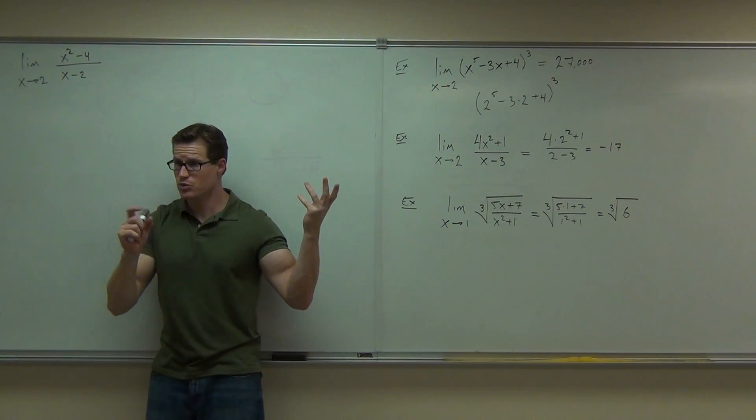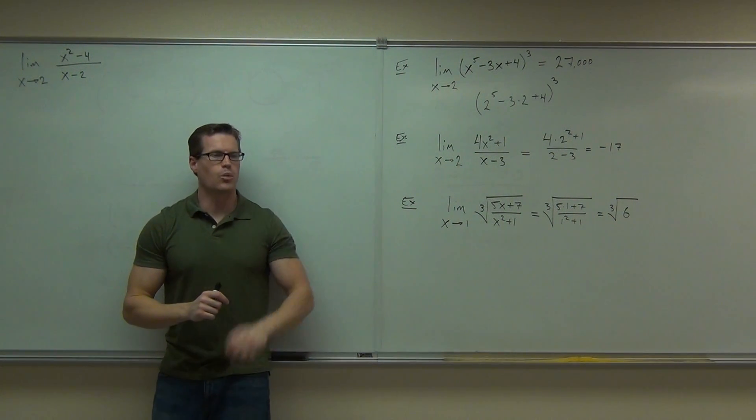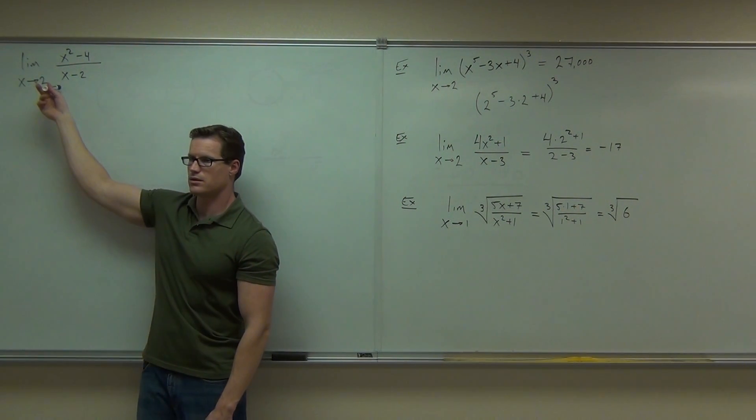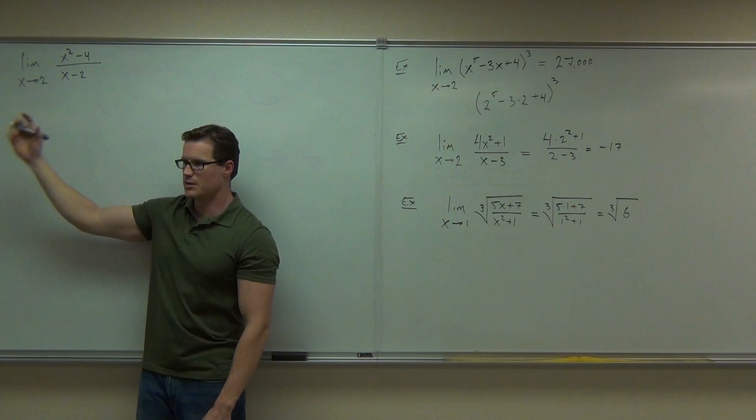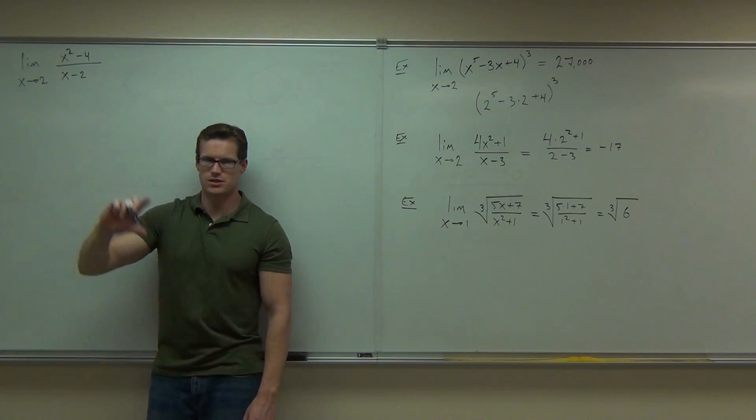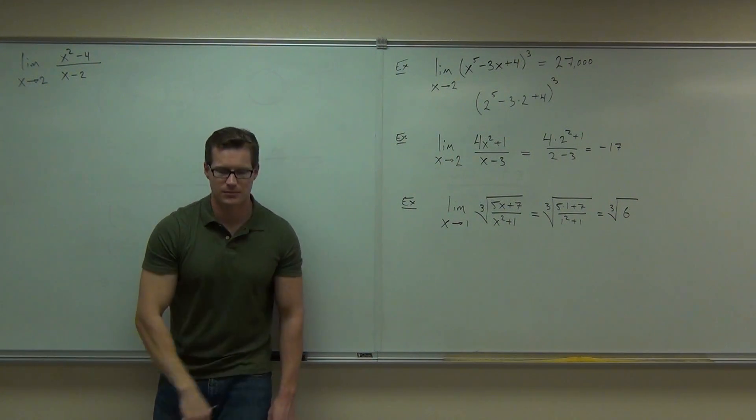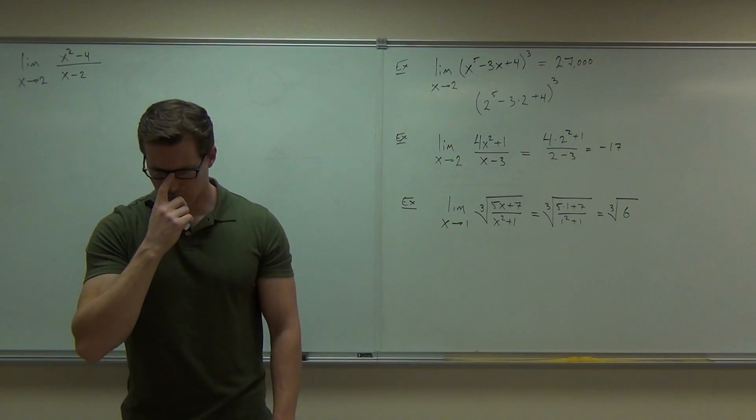You get 0. Is it okay to have 0 on a numerator? Sure. Yet, on a numerator, yes. Now, what would happen though if you try to substitute in this 2 down here? You get 0. The limit of your denominator would be 0. Is that a good thing to have? No, that's a problem. We can't ever have that.